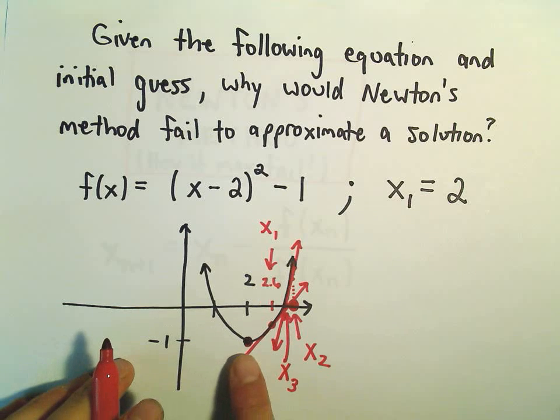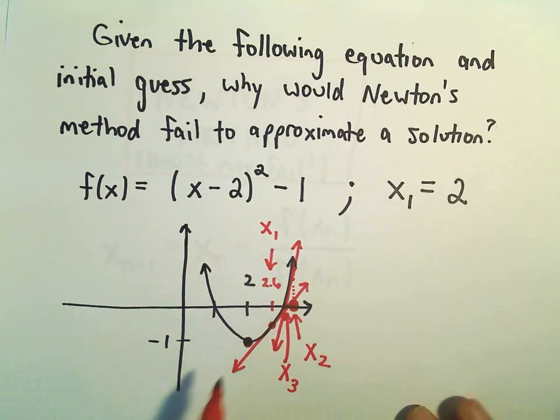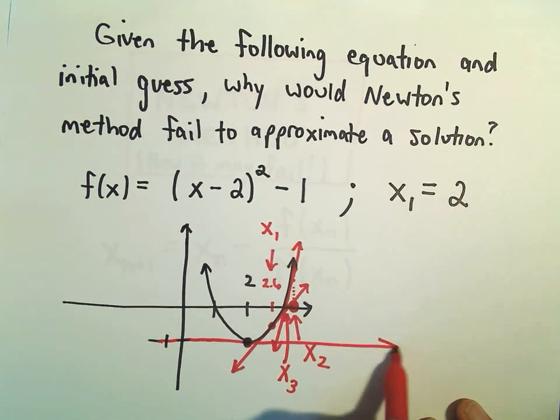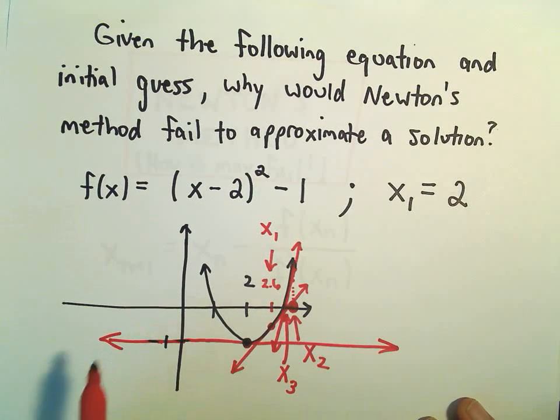Well, the point is, if we try to use 2 as our guess, if you think about the tangent line there, the tangent line there is just going to be horizontal. It's going to be a flat line.